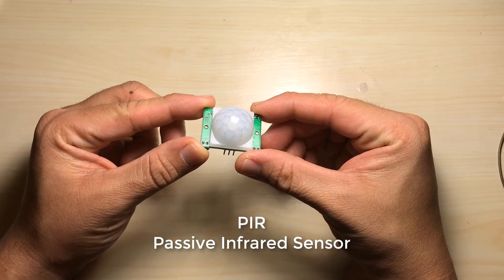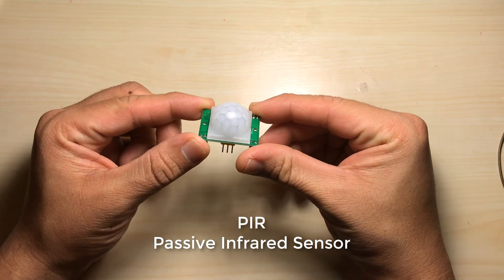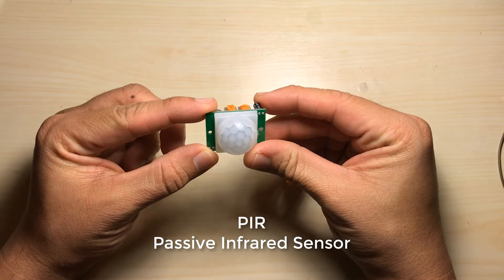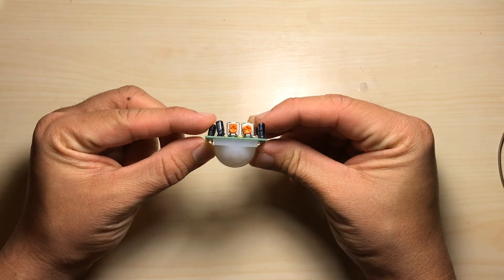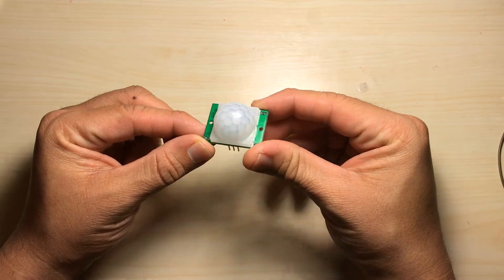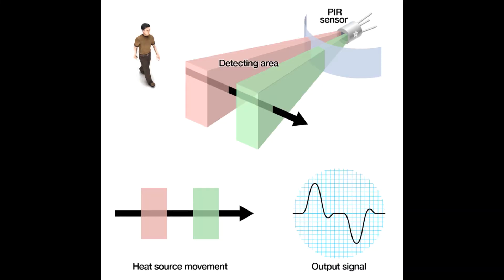A PIR or passive infrared sensor is a very interesting component. It can be used in a lot of Internet of Things and automation projects. Here is how it works.